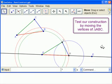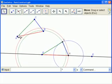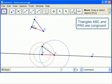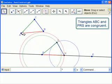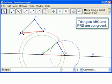Let's test our construction. So if we move A, B, and C, these points should move. So let's get our move tool. And we can see that we're always getting a congruent triangle.